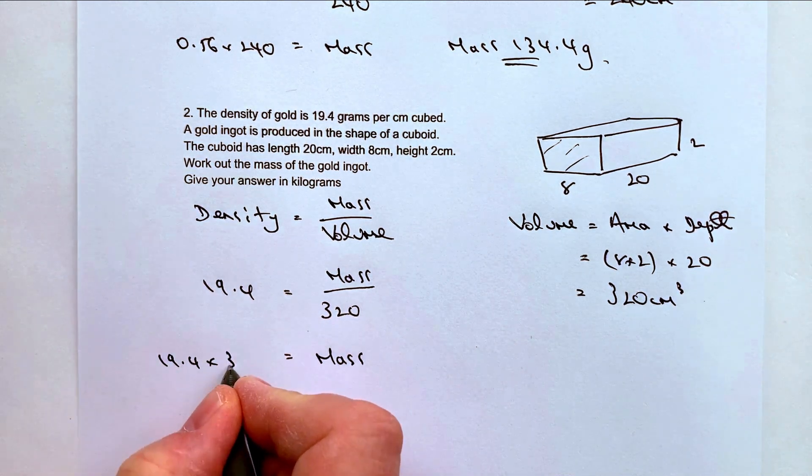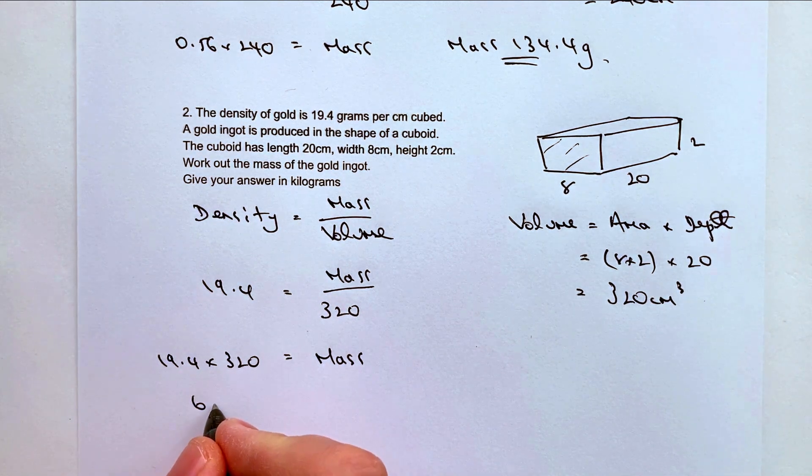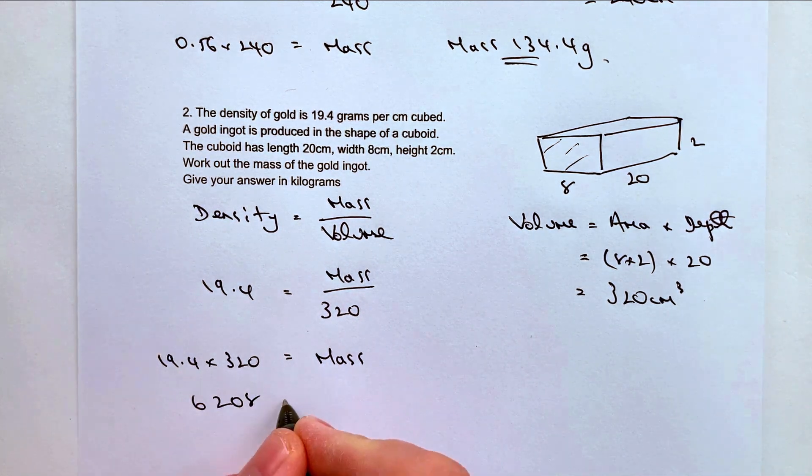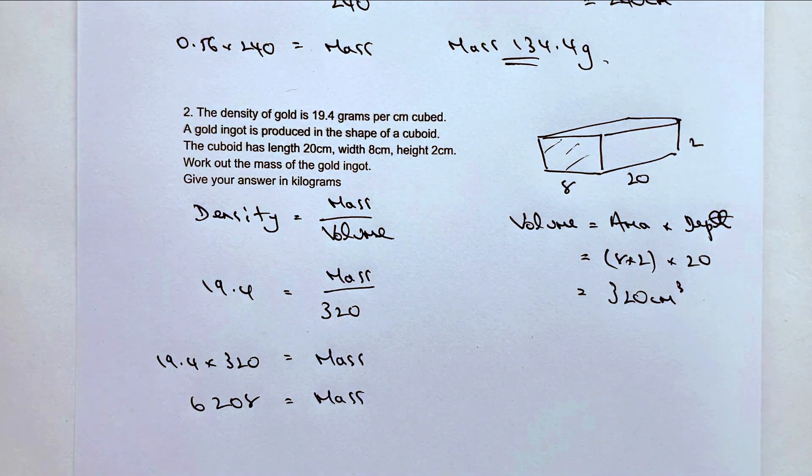And I just on my right hand side I get mass, and mass is going to be equal to 19.4 times 320. Work that out however you do it and you're going to get 6208 equals mass, which is actually the measurement in grams.